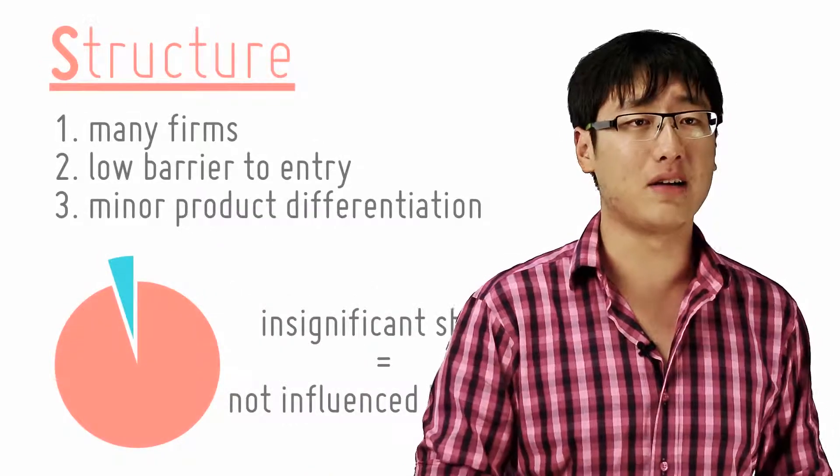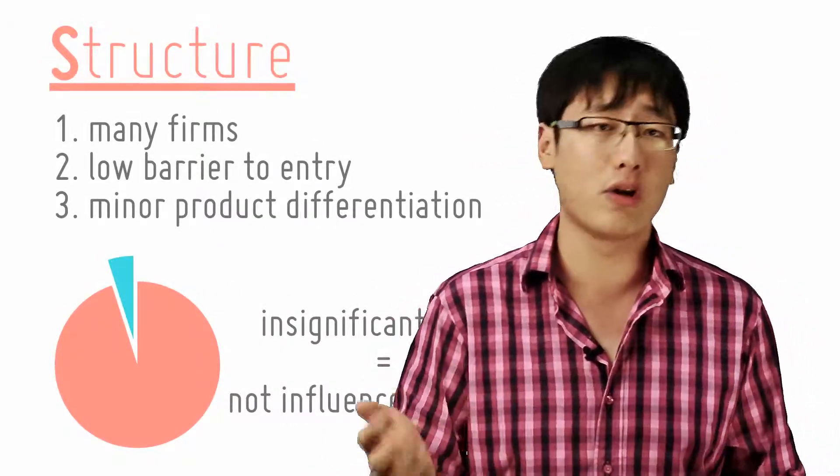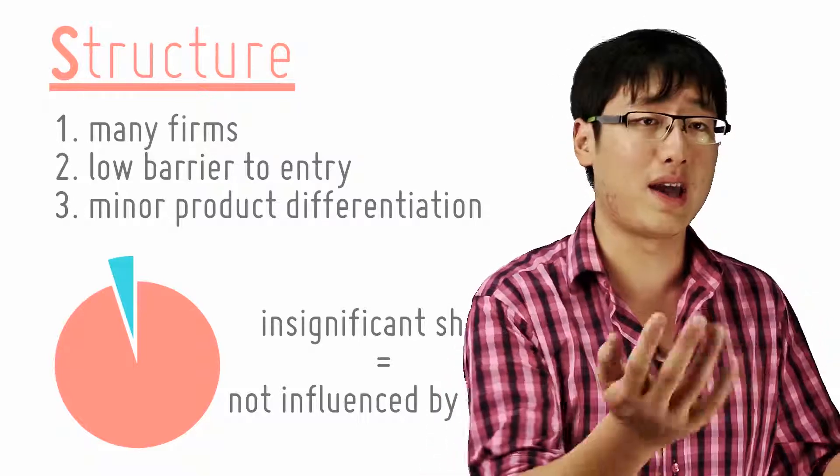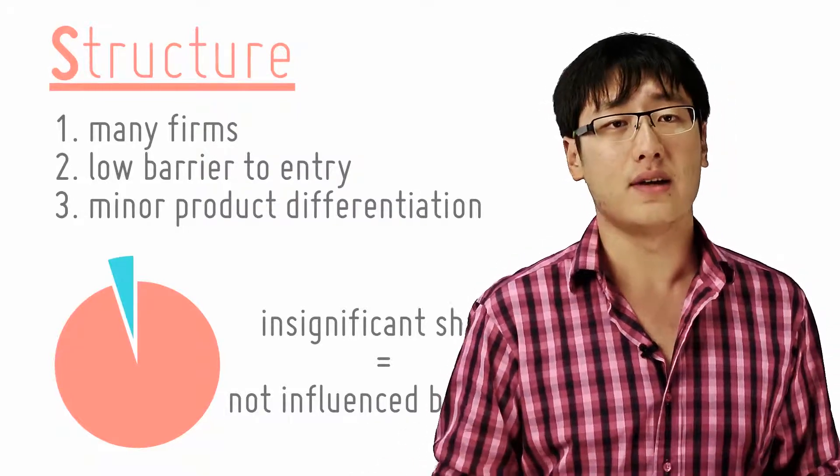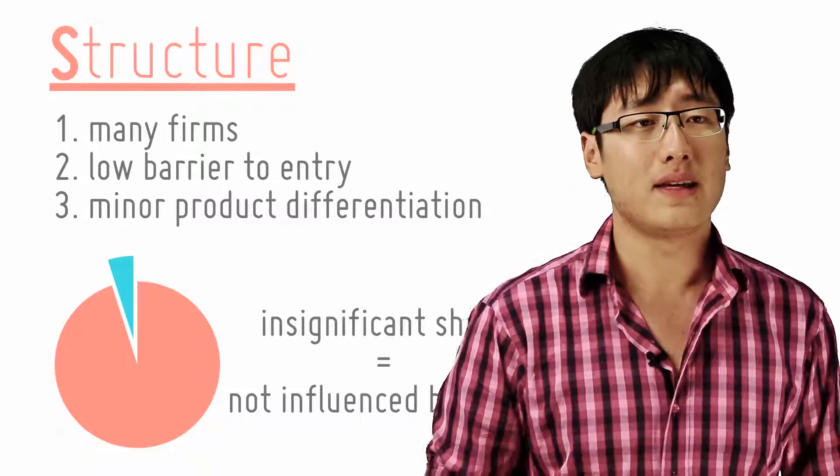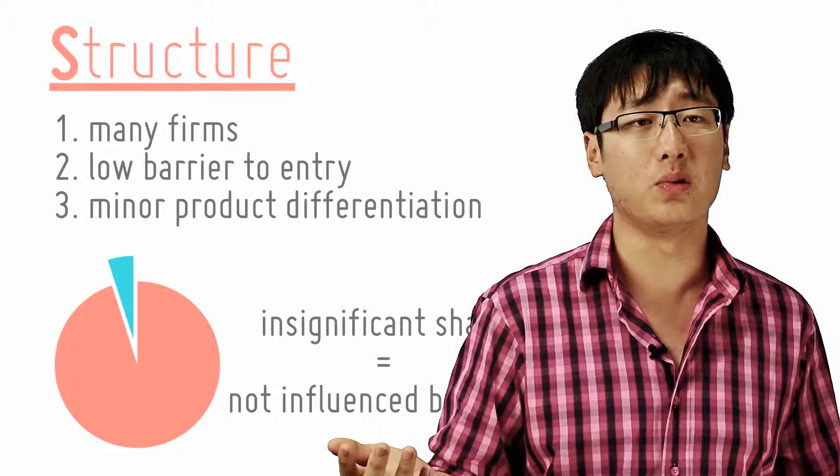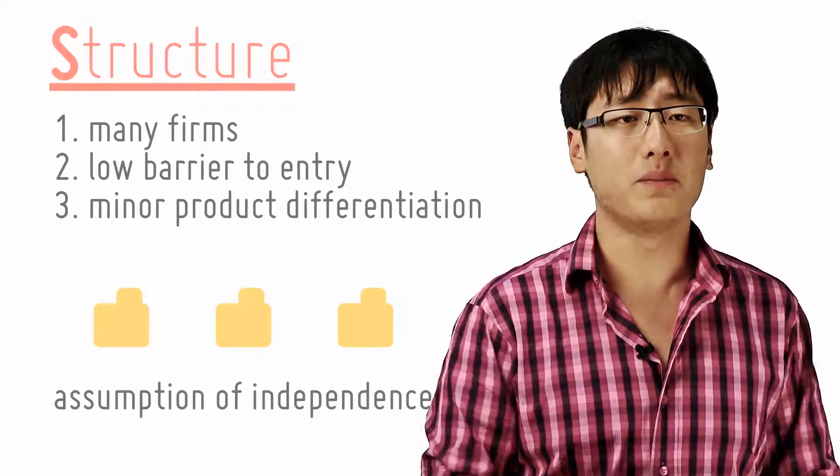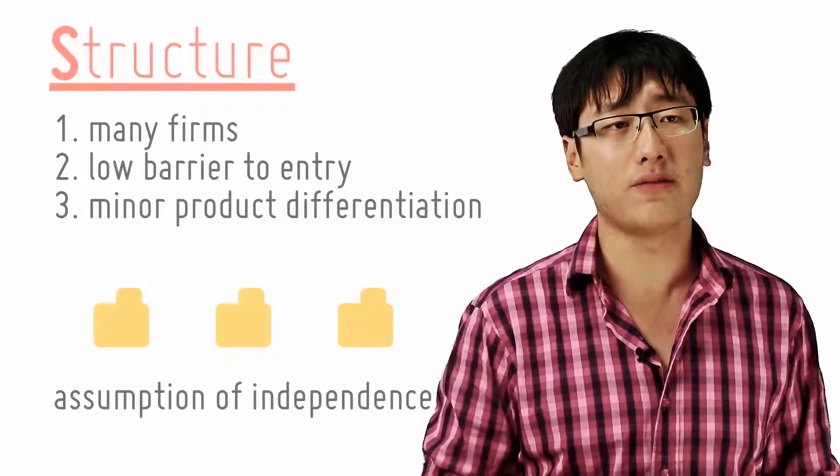There are many firms. As a result, each firm has an insignificantly small share of the market and therefore its actions are unlikely to affect its rivals to a great extent. It also means that each firm makes decisions and does not have to worry about how its rivals react. It assumes that rivals can choose what to do without being influenced by anyone else. So this is known as the assumption of independence.